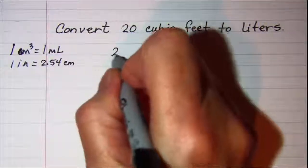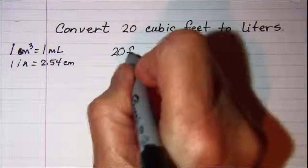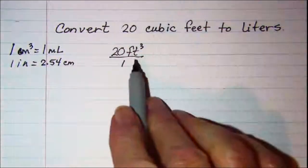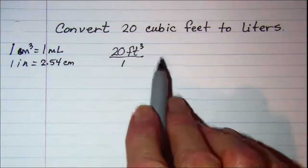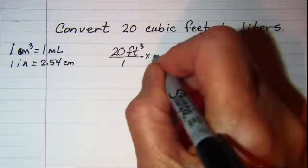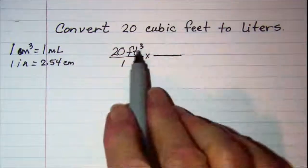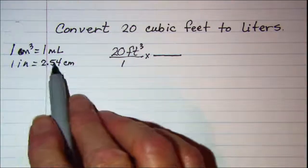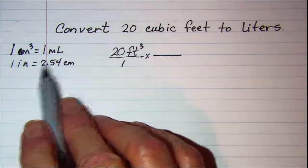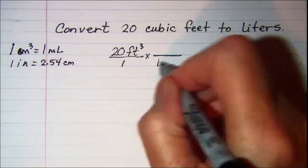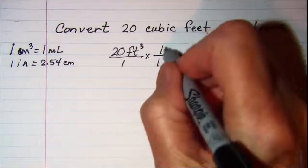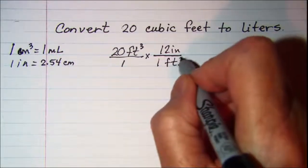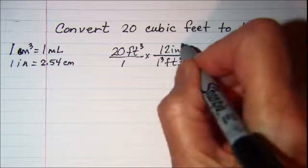I will start with my 20 cubic feet. I will write that this way so that I can cube my unit multipliers over here. I need to go from feet down to inches and then I can make the jump over to the metric system. So 1 foot is 12 inches and again I have to cube every factor here.